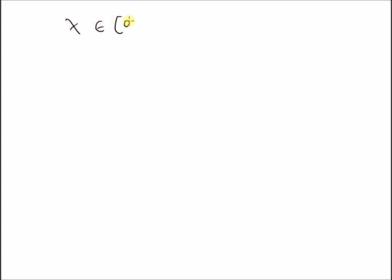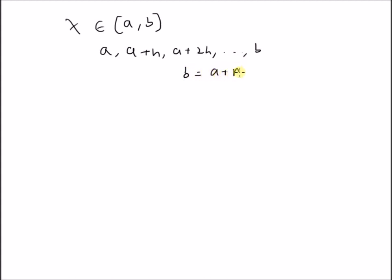Consider a discrete uniform random variable x that belongs to the interval a comma b. The values of x are a, a plus h, a plus 2h, and so on up to b, where b is equal to a plus n minus 1 into h. These are the different possible values of x, assuming there are n total number of values.